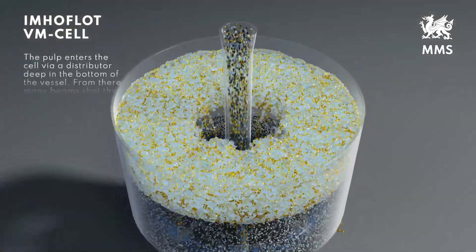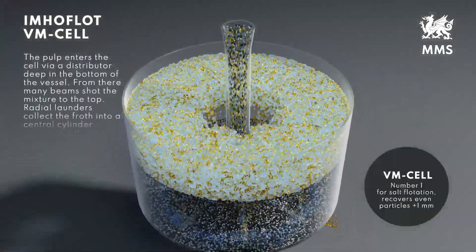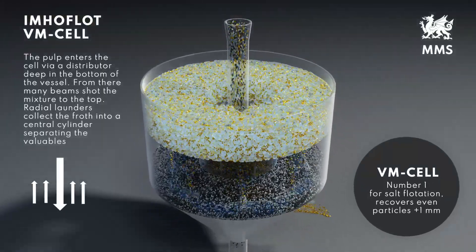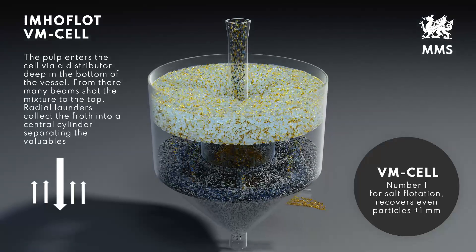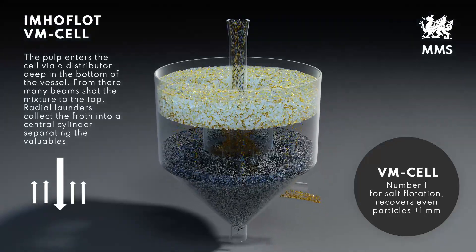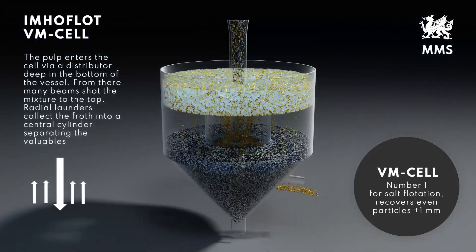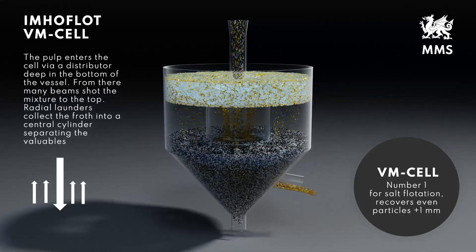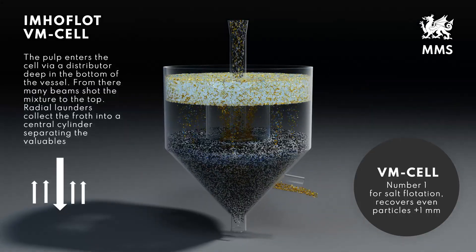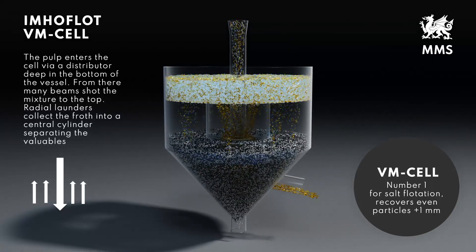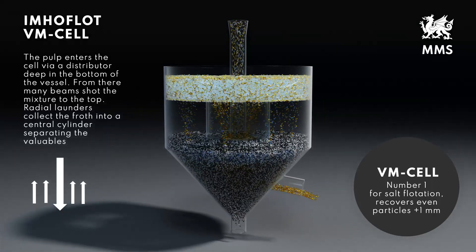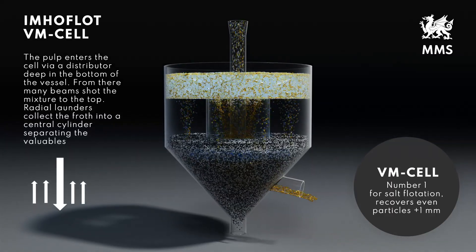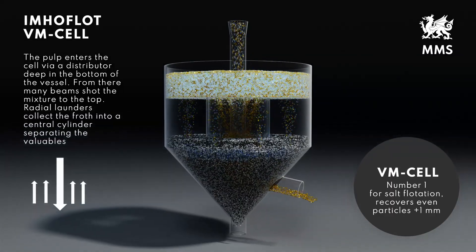For coarse grinds, MMS prefer the new VM-cell separator, based on the traditional V-cell, with the vertical injection of the aerated pulp and a central froth overflow instead of a circumferential froth discharge launder. Radially aligned froth channels provide a far longer lip line for the froth overflow. The distance for a coarse, valuable particle to reach the lip is optimally short. The froth collector in the center of the separator reduces the footprint required by the standard V-cell.